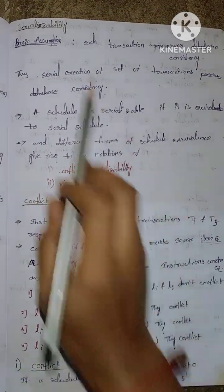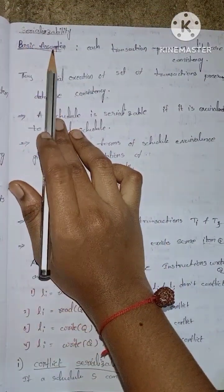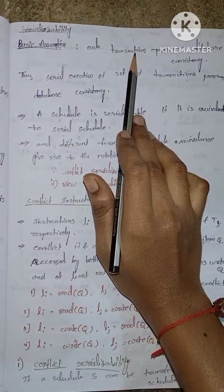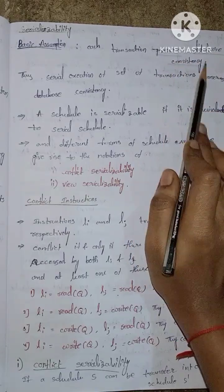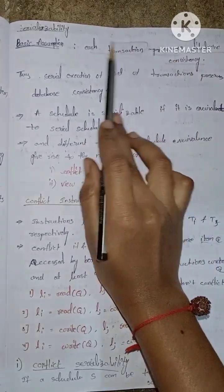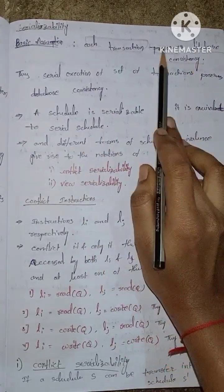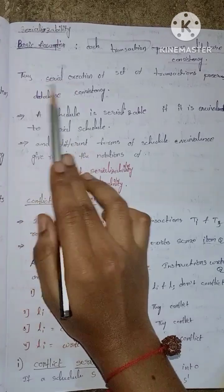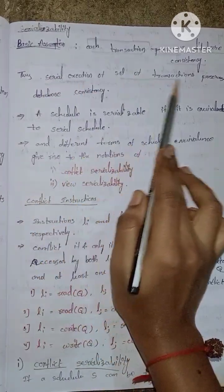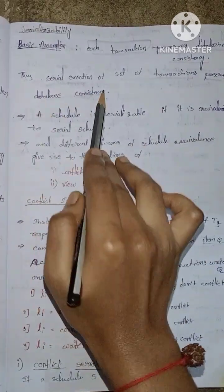The next topic is serializability. The first basic assumption is that each transaction preserves the database consistency. Thus, serial execution of a set of transactions preserves the database consistency.